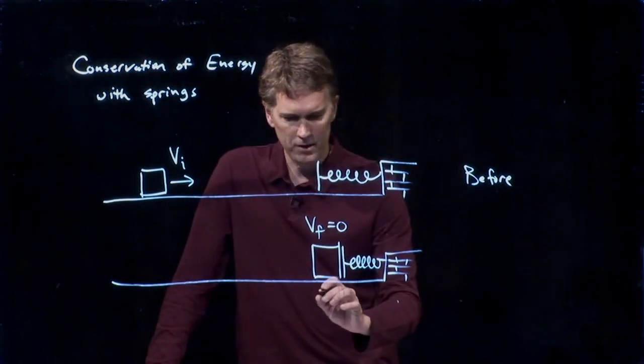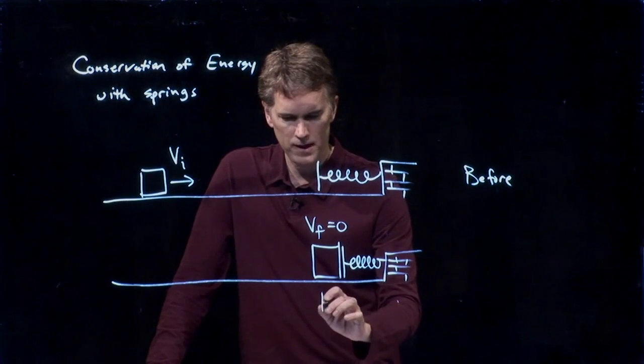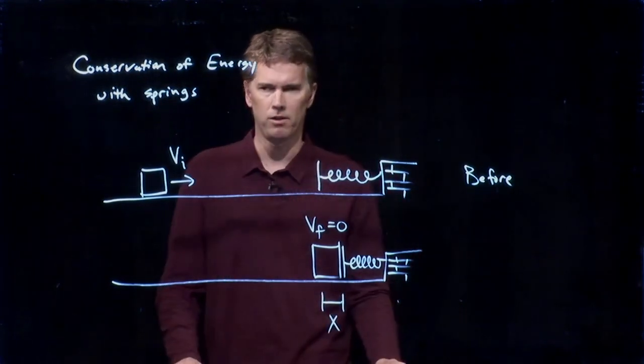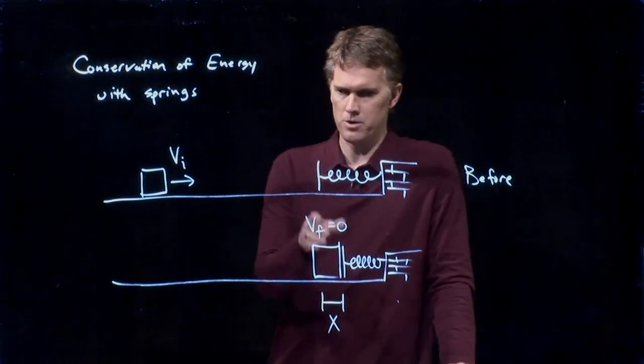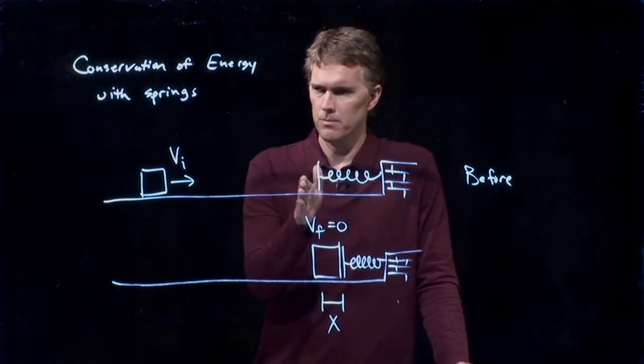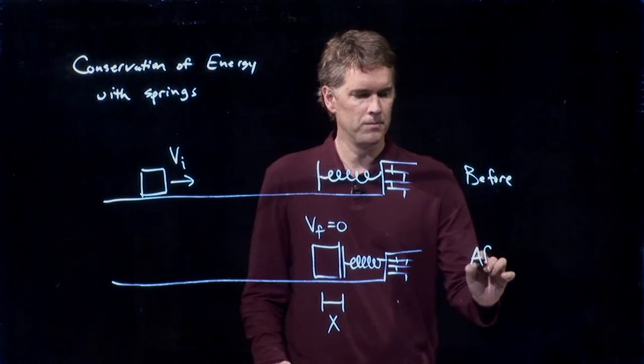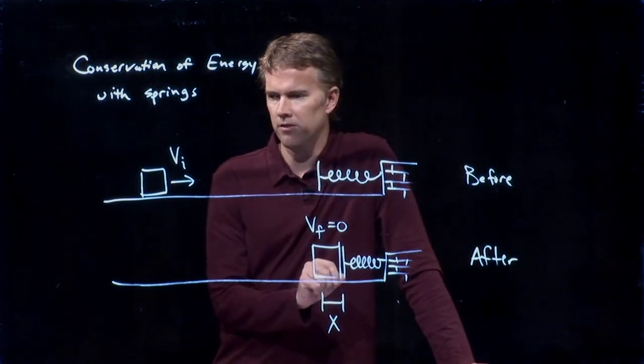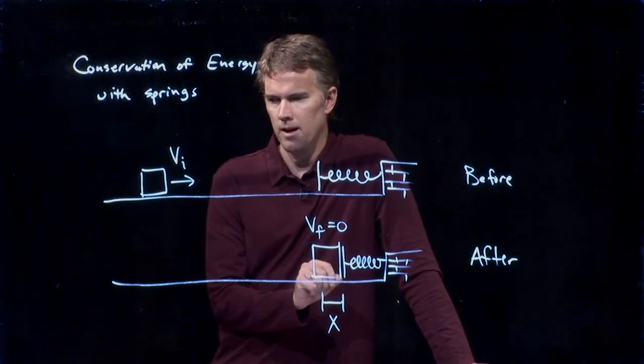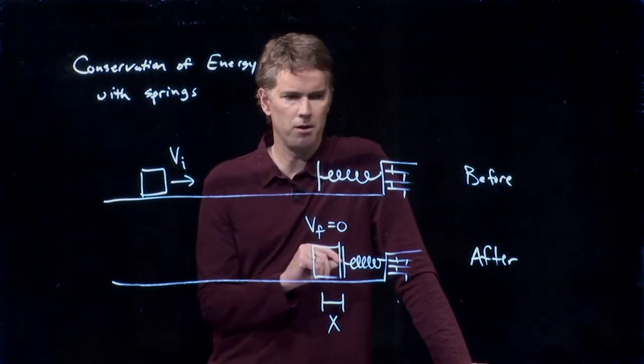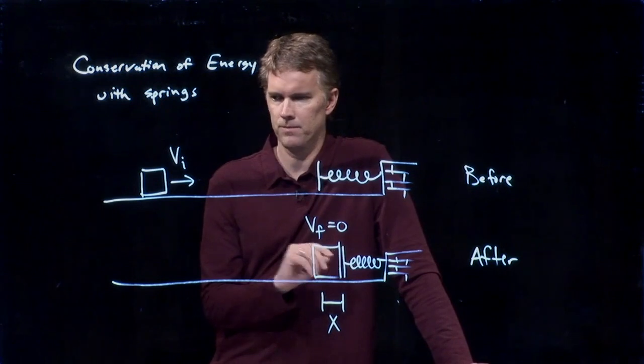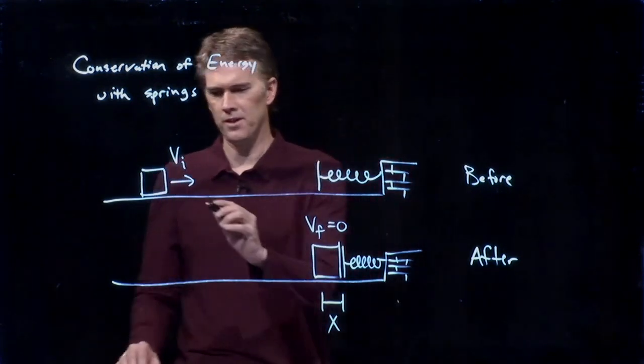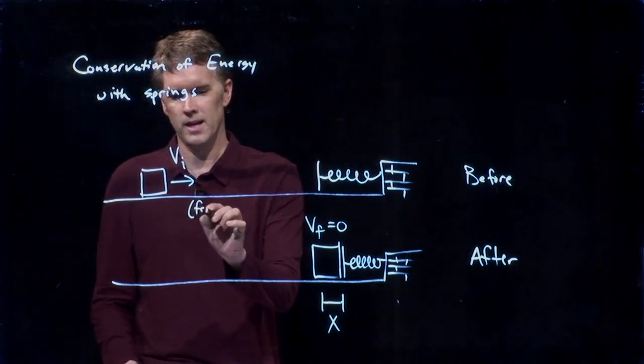Now, one thing that we need to know is how far did that spring compress? It compressed a distance x. X is always measured from equilibrium to maximum compression. And so that is the distance x that we're worried about. And it looks like we have all the other terms that we need. This is the before picture. This is the after picture. And we're going to say that this surface is frictionless.